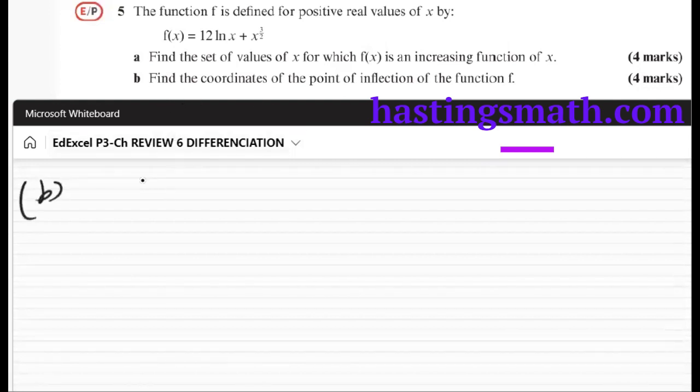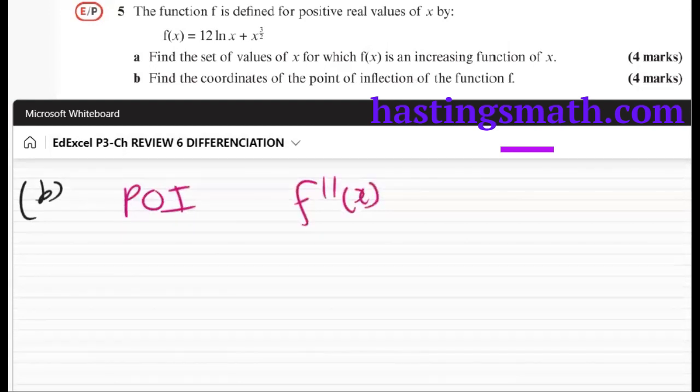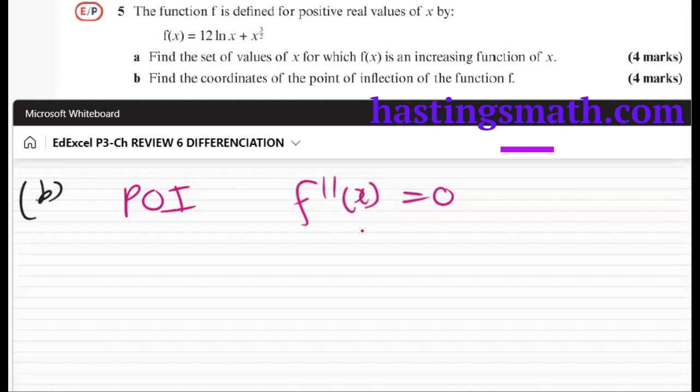Number b says find the point of inflection. So for points of inflection, our second derivative is equal to zero. That's how we know, second derivative equal to zero.